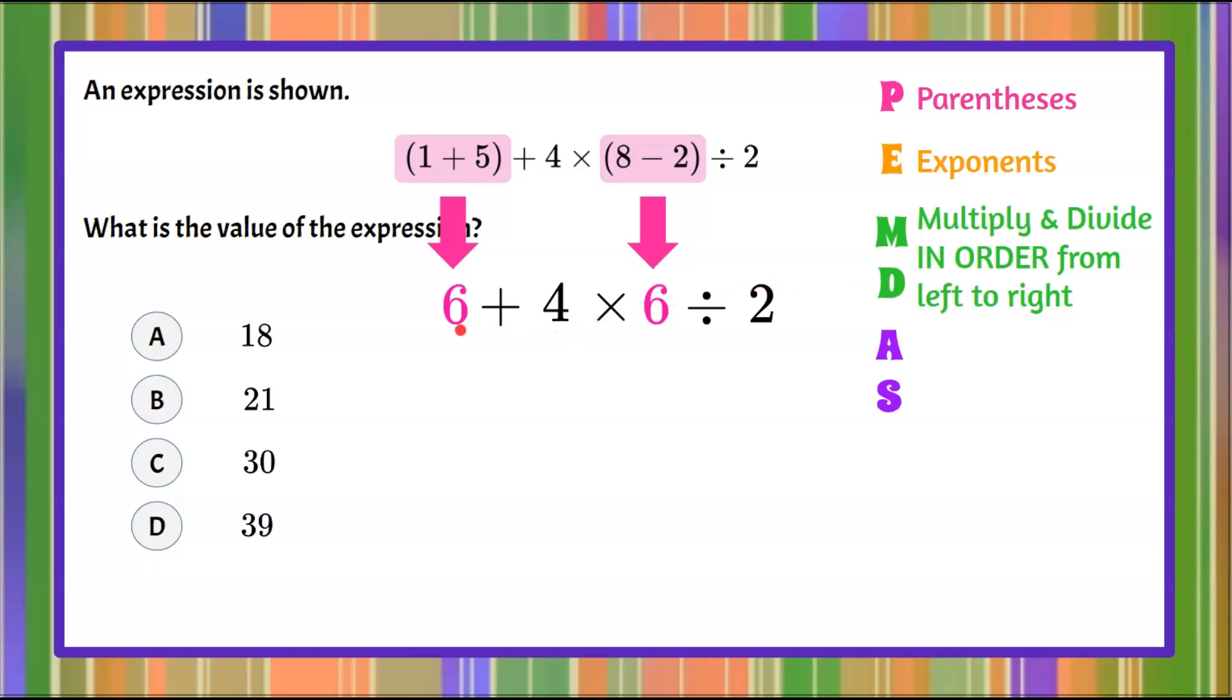So let's go and look for multiplication and division. Starting from the left, we identify that we have a product right here. 4 multiplied by 6. So we're going to bring down our 6 add, the product of 4 multiplied by 6 is 24. And then we bring down our divide by 2.